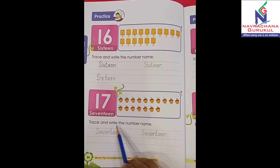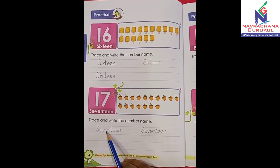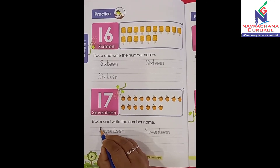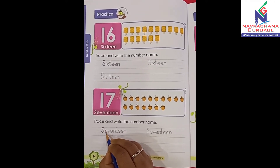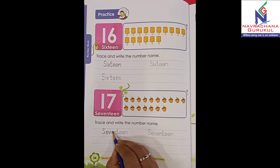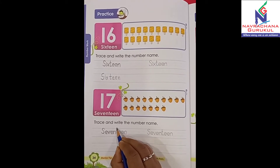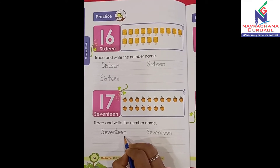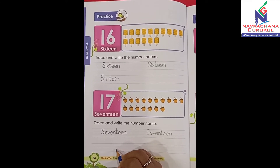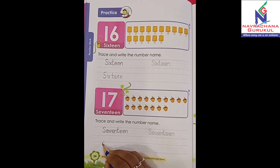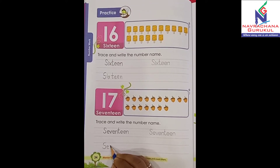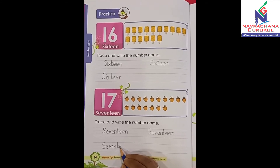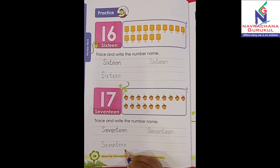Okay? Now let's write the number 17. Let's trace it: S-E-V-E-N-T-E-E-N, 17. Now let's write it over here: S-E-V-E-N-T-E-E-N, 17.